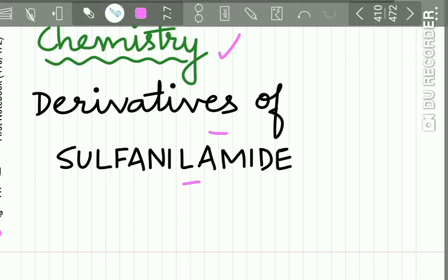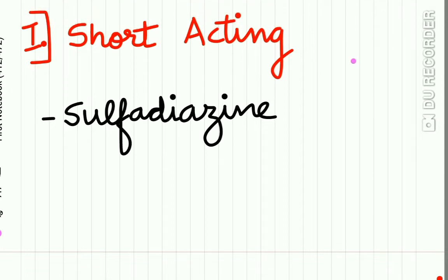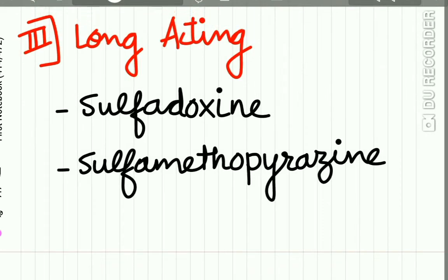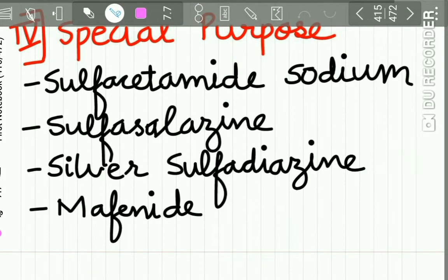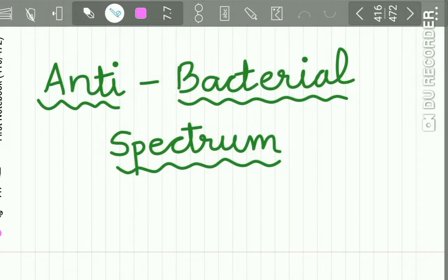Regarding chemistry, sulfonamides are derivatives of sulfonyl amide. The classification: sulfonamides are classified into four groups — short acting, intermediate acting, long acting, and special purpose sulfonamides. Short acting includes sulfadiazine; intermediate acting includes sulfamethoxazole; long acting includes sulfadoxine and sulfamethoxypyrazine; and special purpose sulfonamides include sulfacetamide sodium, sulfasalazine, sulfadiazine, and mafenide.